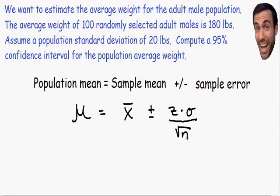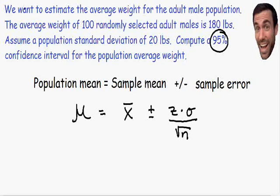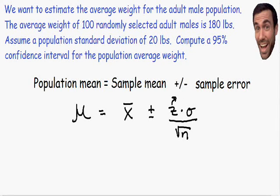Let me explain what these letters mean. Z is the Z value we are going to use, and it is dependent upon the confidence interval percentage. For a 95% confidence interval, the Z value is 1.96. For a 90% confidence interval it would be different. If you ever have trouble memorizing Z values, you can always use your Z table to find the Z value for each confidence interval percentage.